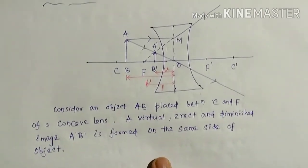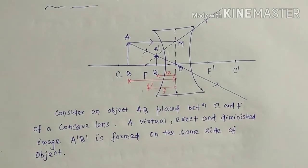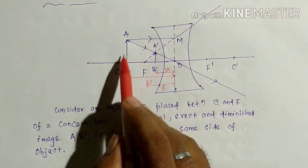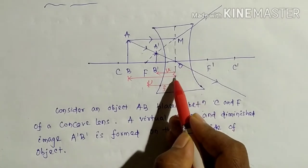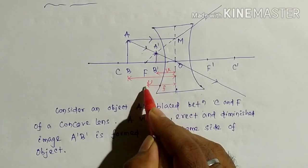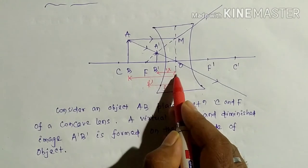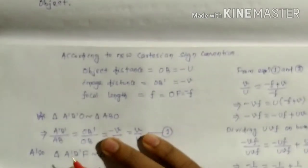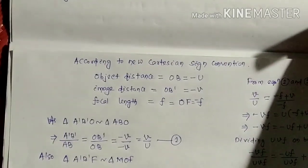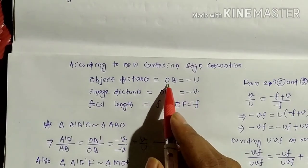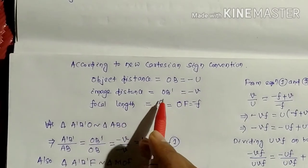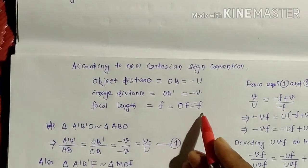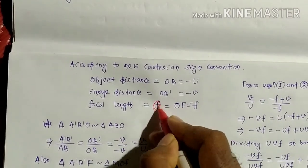Now we will discuss the object distance, image distance, and focal length according to sign conventions. The object distance is the distance of the object from the optical center, that is u. The image distance is the distance of the image from the optical center, that is v. According to sign conventions: object distance OP = −u, image distance OP' = −v, and focal length OF = −f.